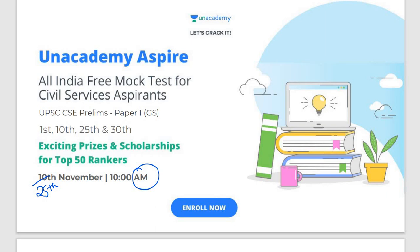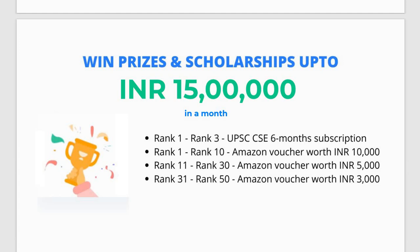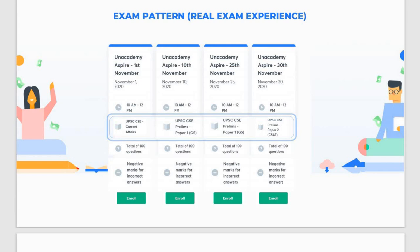There are high chances you can win exciting prizes and scholarships. If you score ranks 1 to 3, you get a free UPSC CSE 6-month subscription. Rank 1 to 10 gets an Amazon voucher worth ₹10,000; rank 11 to 30 gets ₹5,000; rank 31 to 50 gets ₹3,000. These prizes are given only if you attend the test live.